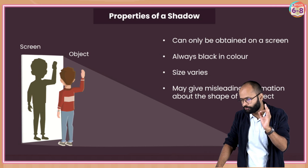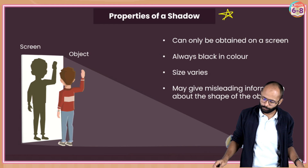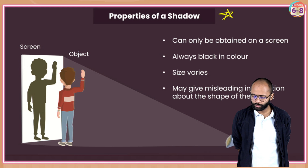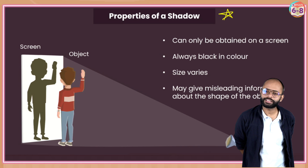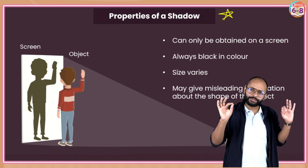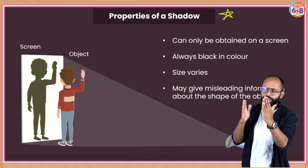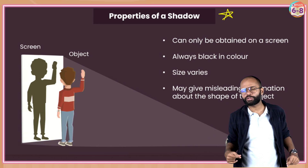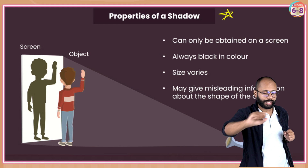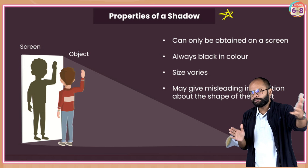What are the properties of a shadow? Very very important topic - questions come every year in the paper. Shadow can only be obtained on a screen; you need a screen to cast a shadow. Shadow is always black in color. If you have a red colored torch, the shadow will still be black - shadow is absence of light. The object will block the red light and your shadow will be black. Shadow is always black. Size can be varied depending on the distance between source and object, or the object and the screen.